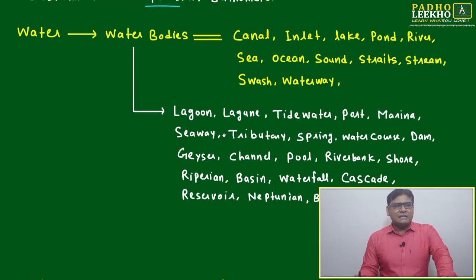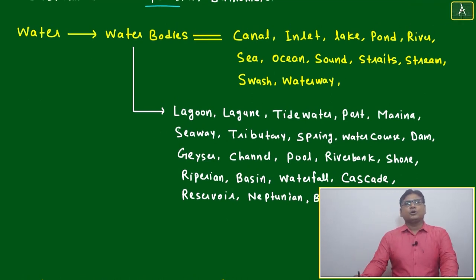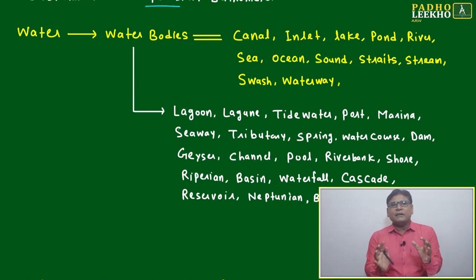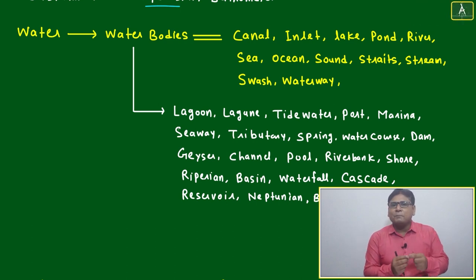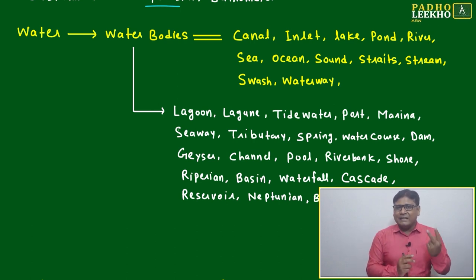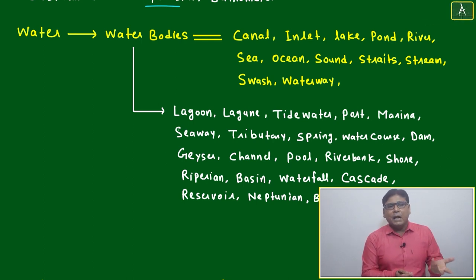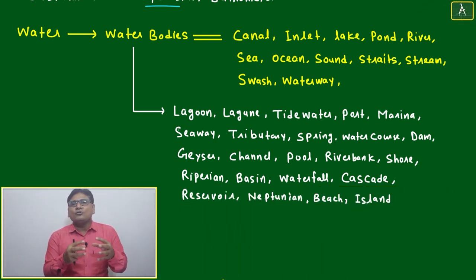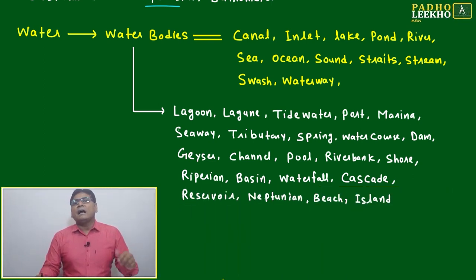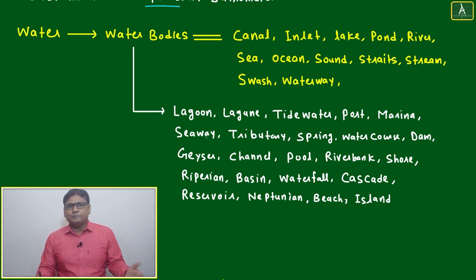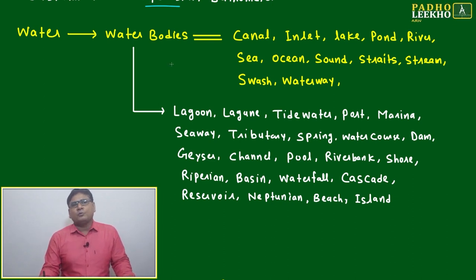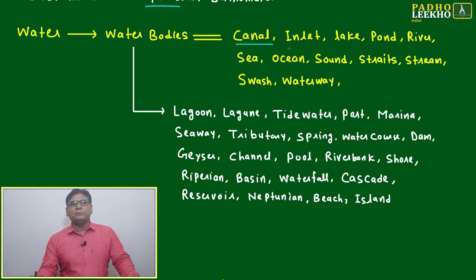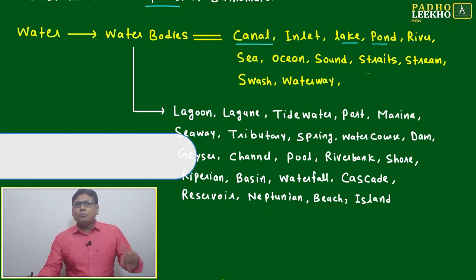Now we come to another kind of understanding related to water — that is water bodies. Water is kept somewhere for a particular purpose, either naturally or artificially. Many times it will naturally accumulate or concentrate at one point, and sometimes based on our requirement we will create water bodies. The main major categories are: canal, which is human-built, and lake and pond, which most of the times will be natural.